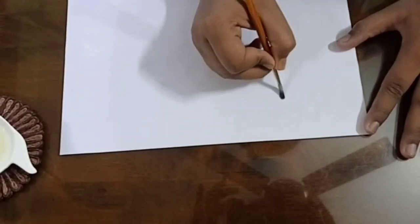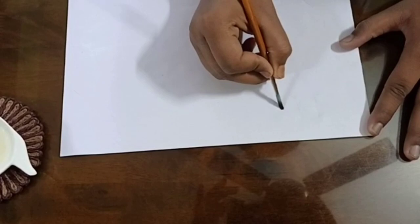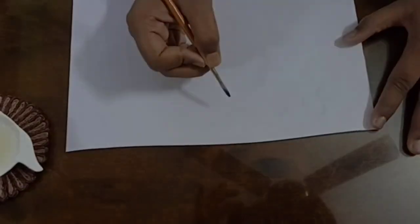After the lemon juice has dried, you have to slowly run a hot iron across the paper.